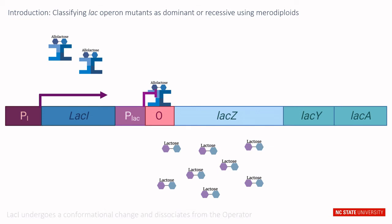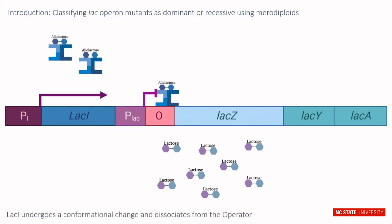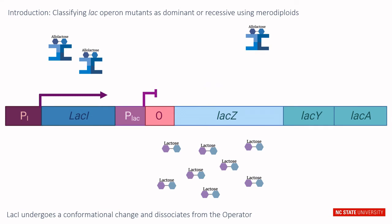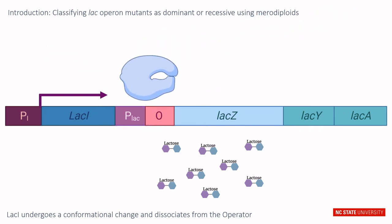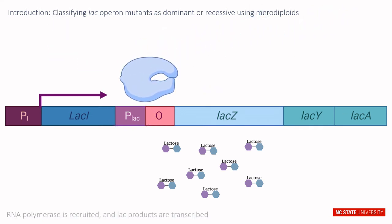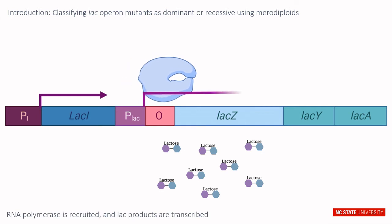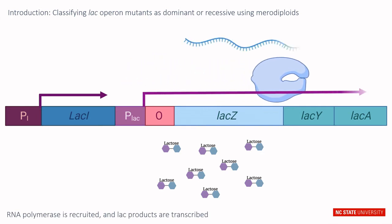This causes lac I to undergo a conformational change and dissociate from the operator. RNA polymerase is then recruited to the lac operon promoter, and the lac products are transcribed.